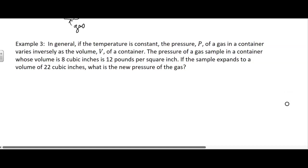So here's our example. In general, if the temperature is constant, because temperature does make a difference, but say the temperature is constant, the pressure P of a gas in a container varies inversely as the volume V. So here comes the model. Pressure varies inversely, that's the equal part, K over V, because it varies inversely as the volume.